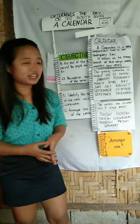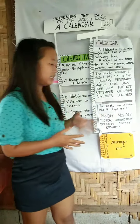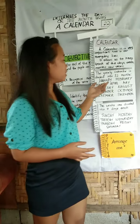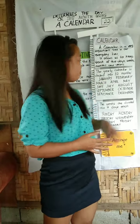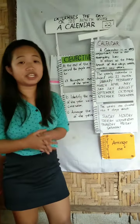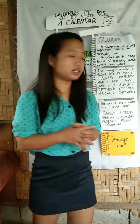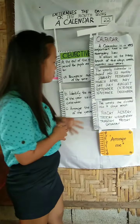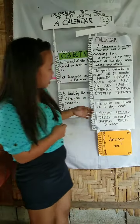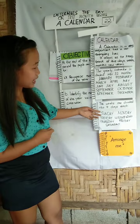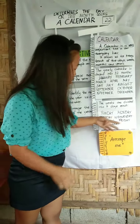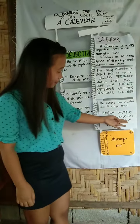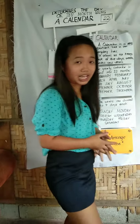Now, the weeks are divided into 7 days each. The 7 days are Sunday, Monday, Tuesday, Wednesday, Thursday, Friday, and Saturday. Alam nyo na ngayon kung ano ang ibig sabihin ng calendar.